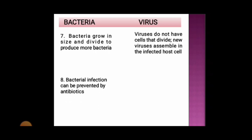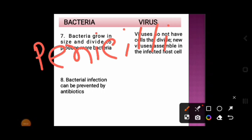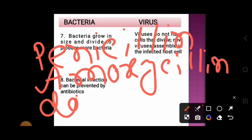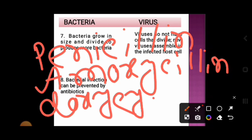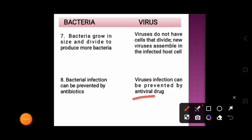Bacterial infection can be treated with antibiotics. Examples of such antibiotics include penicillin, amoxicillin, doxycycline, cephalosporin, etc. Whereas viral infection can be treated with antiviral drugs.